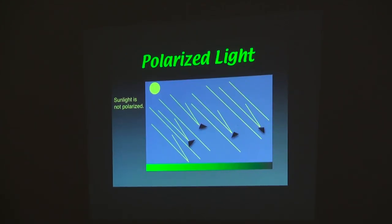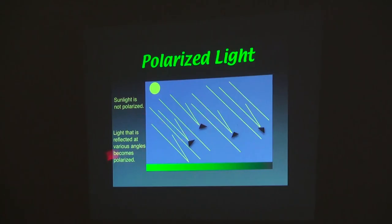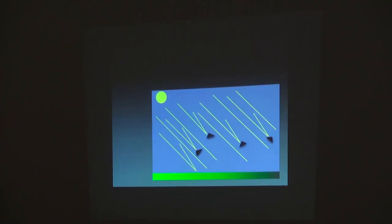When you look into the surface of the water, can you see into the water? No — you see the surface of the water because of polarized light. You look at a window — you see the surface of the window, not through it. That's because of polarized light. Light is reflected at various angles and becomes polarized. There's a filter called a polarizing filter and that's exactly what it addresses — it removes polarized light.